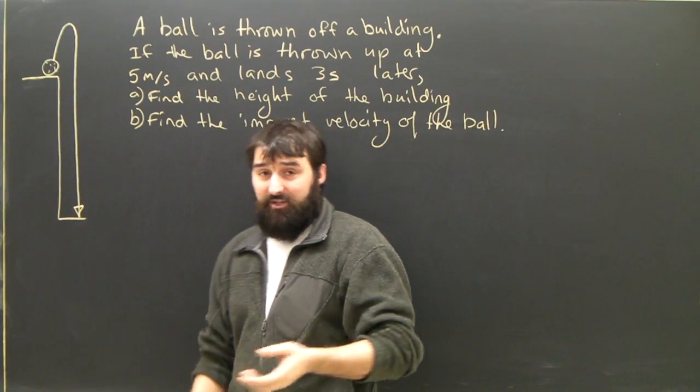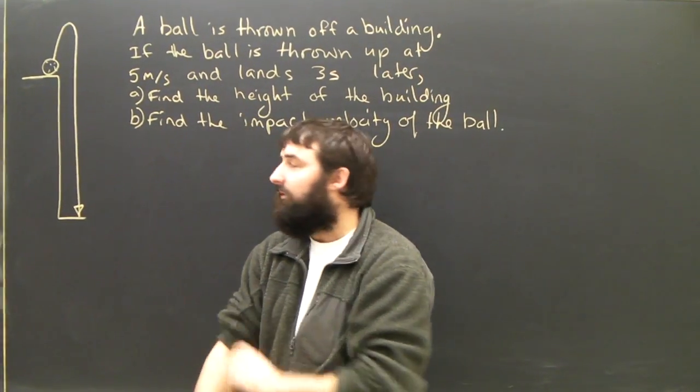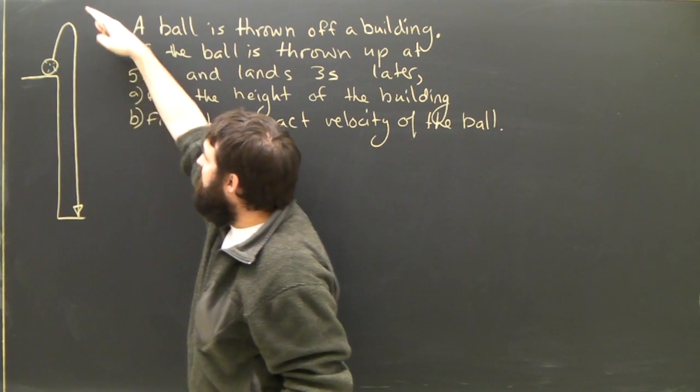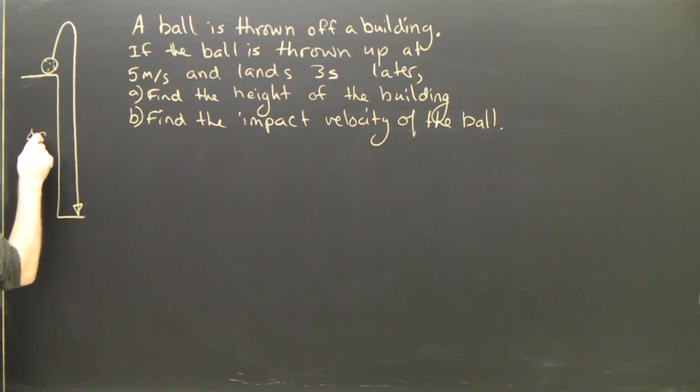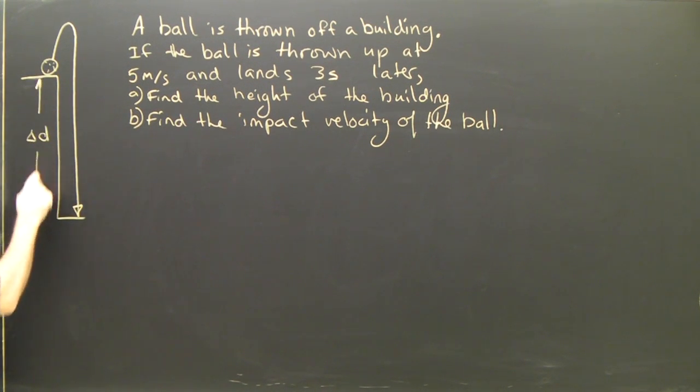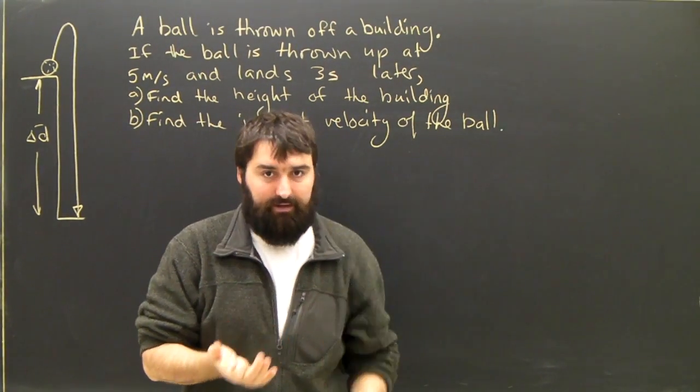So I've made a diagram, which I can't recommend highly enough. Students who have trouble often fail to make diagrams. Here's the ball thrown up and it comes down. What we're trying to find from part A is the height of this building. Obviously, in this case, the ball is going up and then it comes back down.